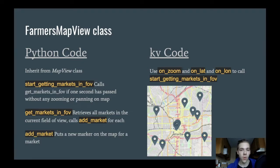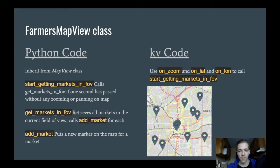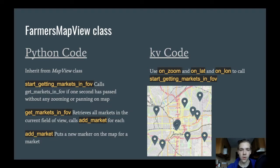get_markets_in_FOV actually queries the database using some SQL. I'll be using the SQLite3 module in Python. So that's going to query the database and say, get me all the markets between this latitude and longitude pair. And then for each one of those that I get back, call the add_market function. The add_market function will put the marker onto the map — so each one of those little blue marker images will be populated on the map in that function. Onto the KV code for the FarmersMapView class, I'll work with the on_zoom, on_lat, and on_lon functions. Anytime the map is zoomed or the lat or lon changes, I'll call start_getting_markets_in_FOV. So anytime the user does something on the map — like move around or zoom — start trying to get the markets in their new field of view.